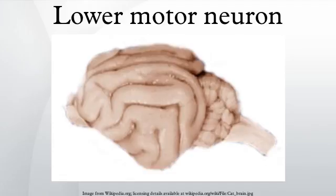Lower motor neurons are motor neurons located in either the anterior gray column, anterior nerve roots, or the cranial nerve nuclei of the brainstem and cranial nerves with motor function. All voluntary movement relies on spinal lower motor neurons, which innervate skeletal muscle fibers and act as a link between upper motor neurons and muscles. Cranial nerve lower motor neurons control movements of the eyes and tongue, and contribute to chewing, swallowing, and vocalization.